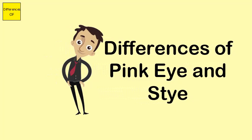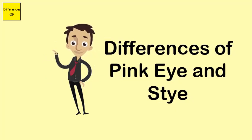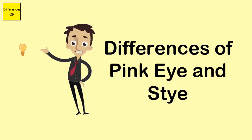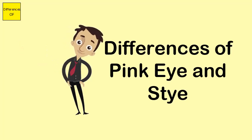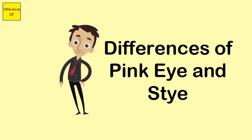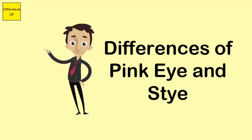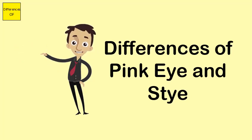Stye is characterized as a pimple or abscess in the upper or lower eyelids. Redness is usually absent or mild. Pink eye, or conjunctivitis, is characterized with redness and swelling in the conjunctiva.